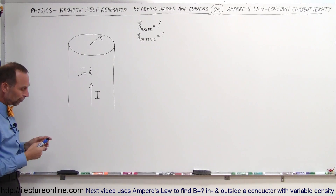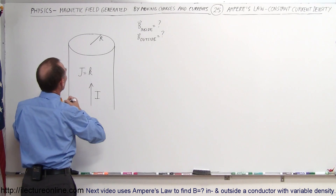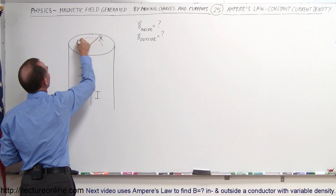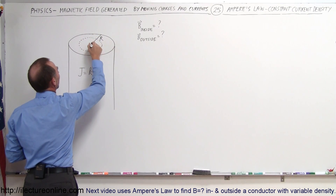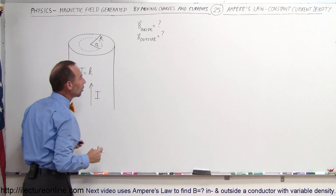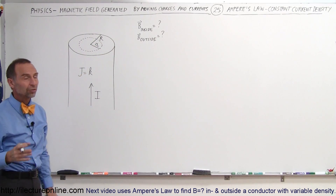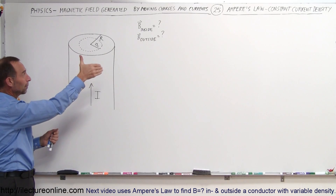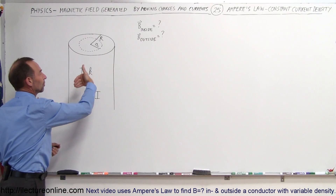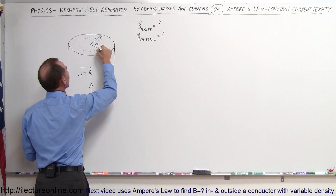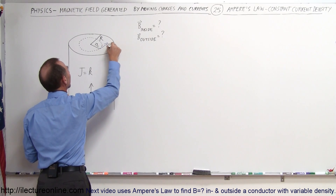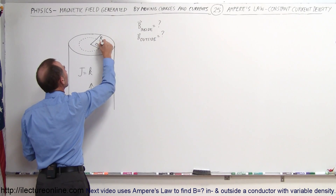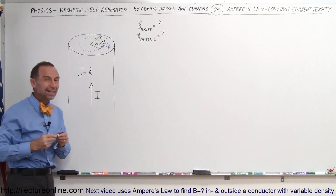Let's start with the inside of the conductor first. We pick any arbitrary point inside. We want to know what the magnetic field is at this location, so we're going to draw a loop of radius small r, where r can be anywhere from zero to the total radius R. Using the right-hand rule, with the current going upward, we know the magnetic field will have a circular path all the way around, and the direction of the magnetic field will be parallel to that loop. If we take a small line segment DL on that loop, DL and the magnetic field will be in the same direction.